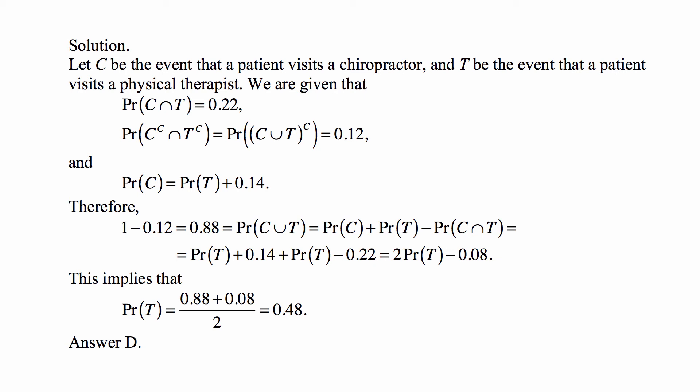But the probability of the union is the probability of C plus the probability of T minus the probability of the intersection. And now in this, we are given the probability of the intersection as 0.22, and the probability of C can be expressed in terms of the probability of T. So once you plug in all that, this becomes an equation in which the only thing that is unknown is the probability of T, which is what we're looking for.